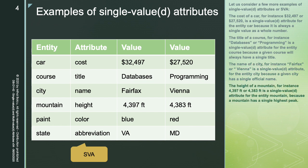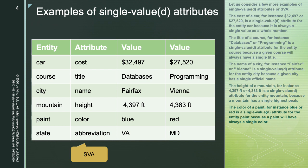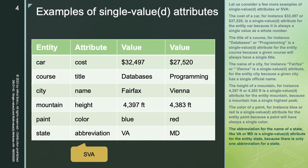The height of a mountain — for instance, 4,397 feet or 4,383 feet — is a single-valued attribute for the entity Mountain, because a mountain has a single highest peak. The color of a paint — for instance, blue or red — is a single-valued attribute for the entity Paint, because a paint will always have a single color. The abbreviation for the name of a state, like VA or MD, is a single-valued attribute for the entity State, because there is only one abbreviation for a state. In all these examples, the attribute has a single value for any entity instance.